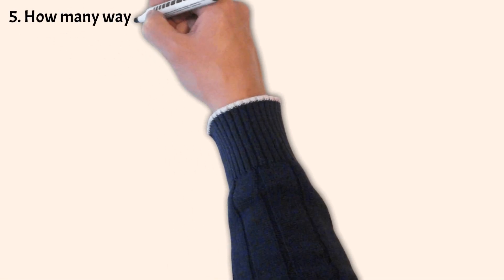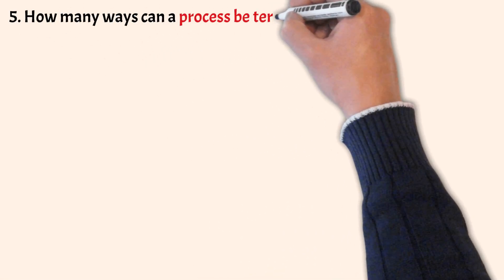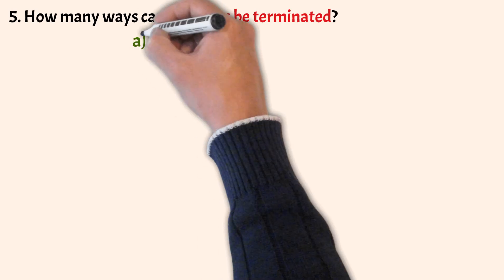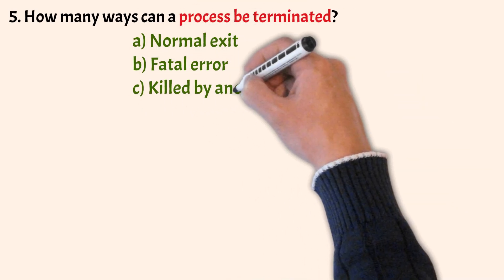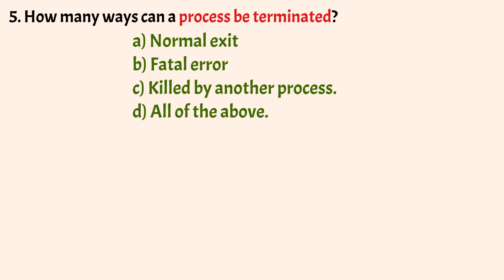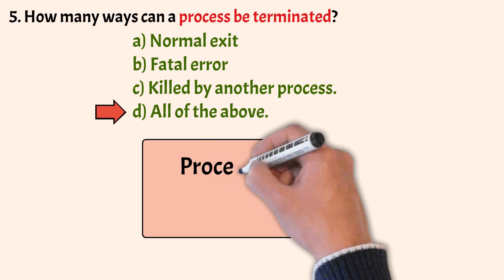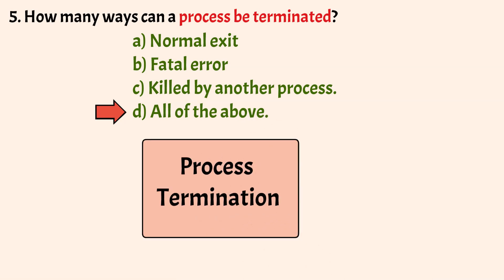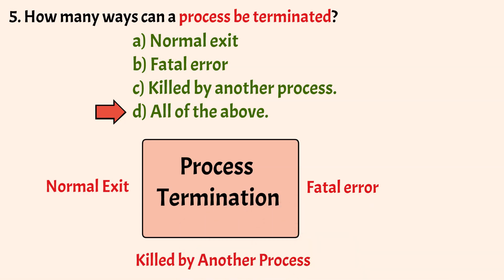How many ways can a process be terminated? Options: normal exit, fatal error, killed by another process, and all of the above. The correct option is Option D, all of the above. A process exits normally when it completes its task successfully. It may exit abnormally due to a fatal error while running, and it can also be terminated forcefully by another process.